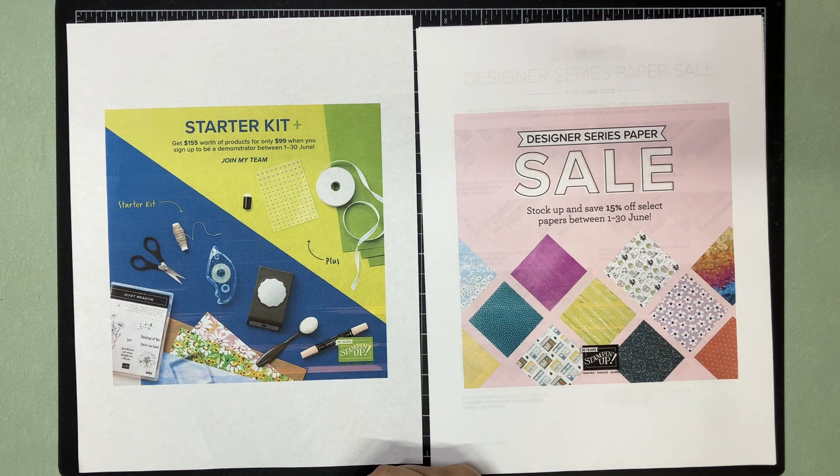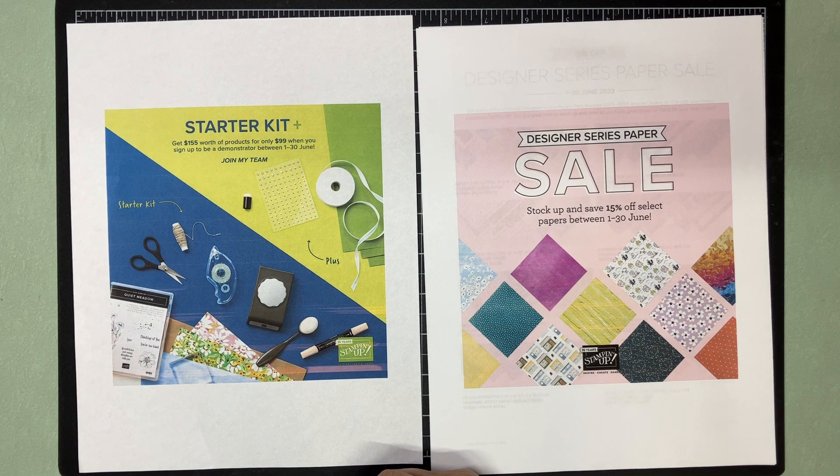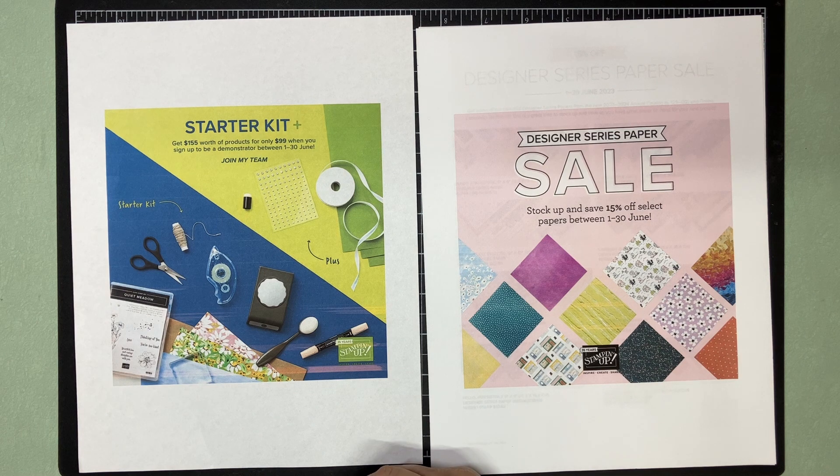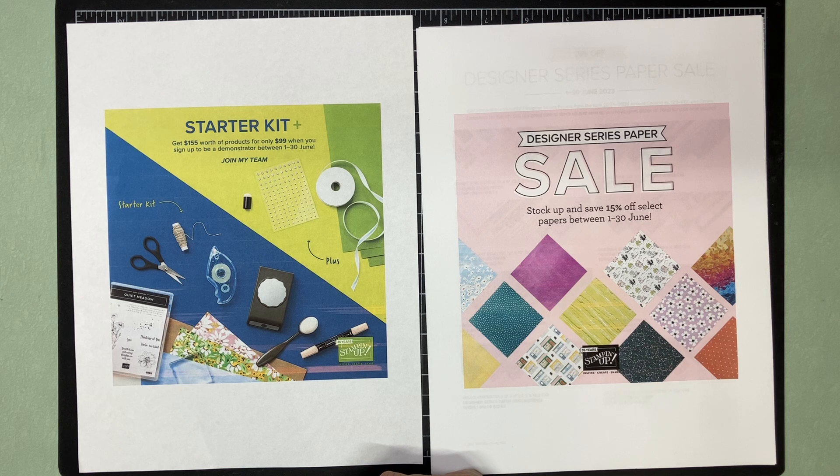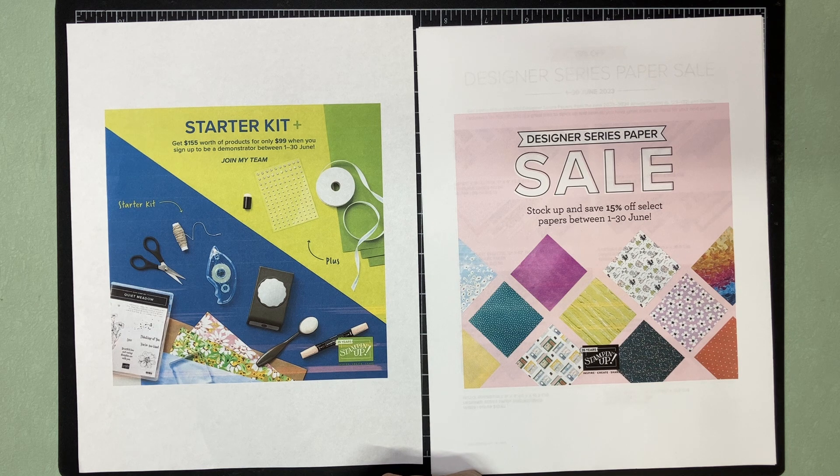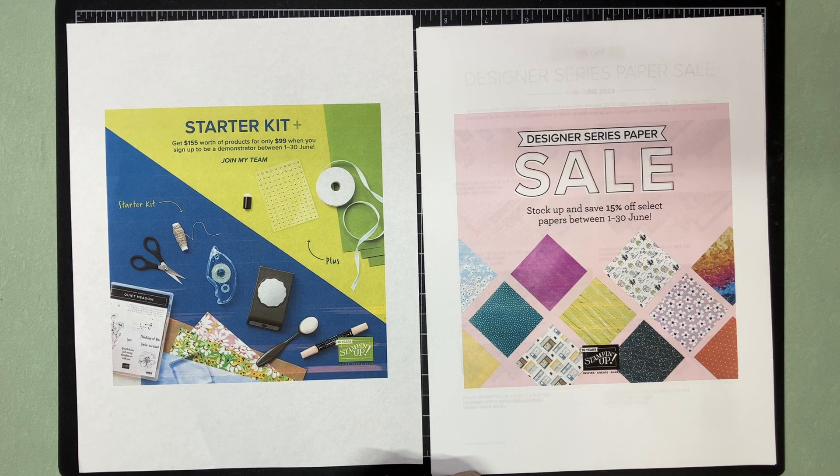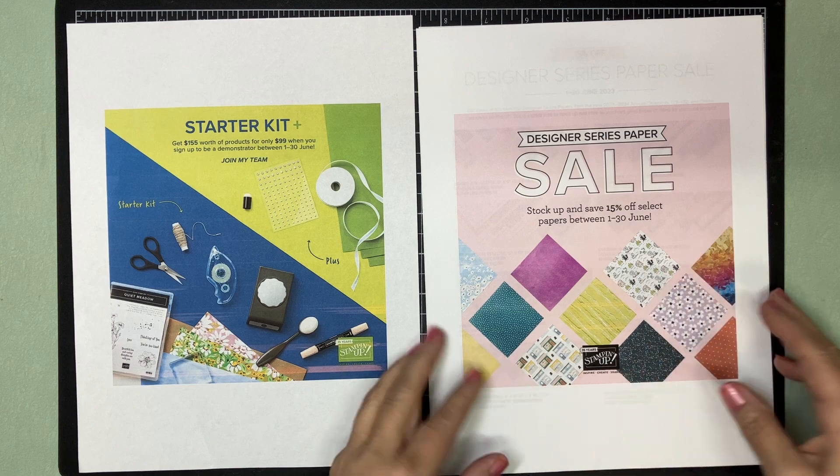Just a quick reminder that the Designer Series Paper sale is still going on until June 30th. There is a new starter kit promotion going till June 30th. $99 will get you $155 worth of product. So if you're interested in becoming a Stampin' Up demonstrator, please send me an email and we can talk.